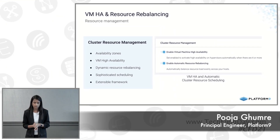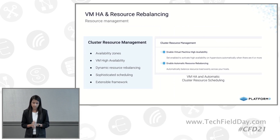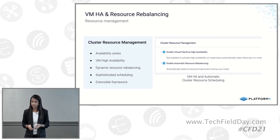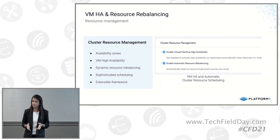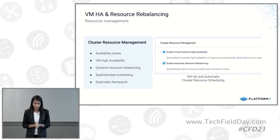I want to highlight these two features: virtual machine HA and the DRS equivalent, which is our resource re-balancing mechanism. Both of these features are available on the VMware side out of the box. It allows you to have host evacuations when you detect that a host is down — it monitors for about three minutes, and then it will automatically fail over your workloads from that failed node to one of your active nodes.